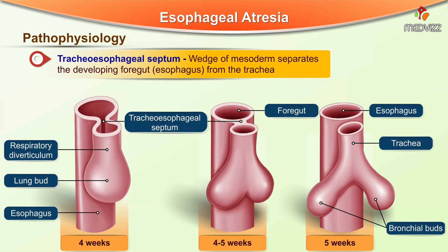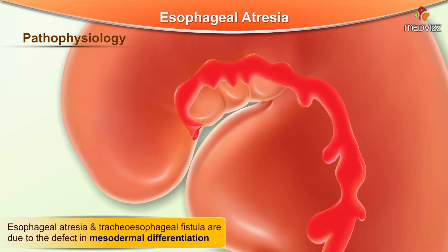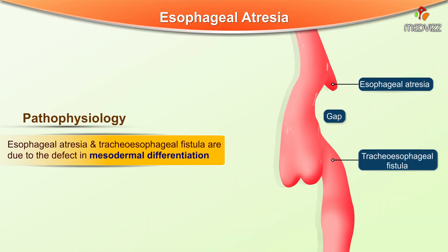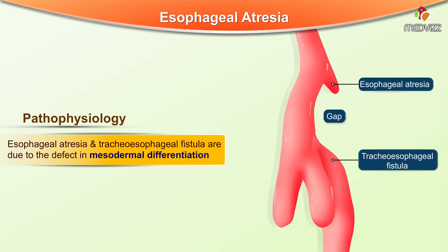Regarding the pathophysiology underlying the formation of an atretic esophagus — recalling embryology, the tracheoesophageal septum, a wedge of mesoderm, separates the developing foregut from the trachea. Esophageal atresia and tracheoesophageal fistula are due to a defect in mesodermal differentiation.